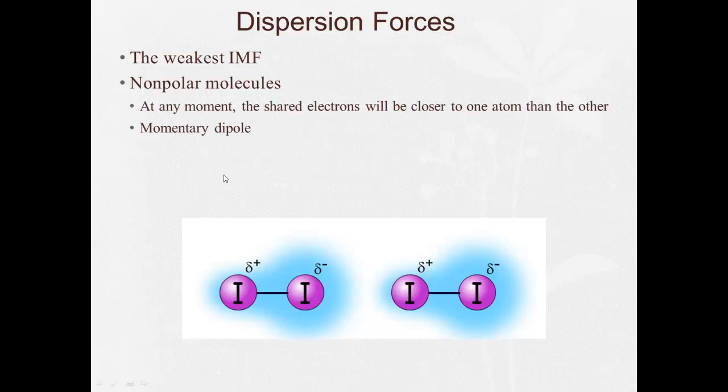That leads to what's called a momentary dipole. So in one moment, this iodine will have the shared electrons, making it more negative, and this one more positive. At another moment, the other iodine will have the electrons, making it more negative, more positive. So at any moment, there could be a dipole, and that's a momentary dipole. And these behave like very weak dipoles. So when we saw the HCl, that was a fairly strong dipole. This is a very weak dipole.